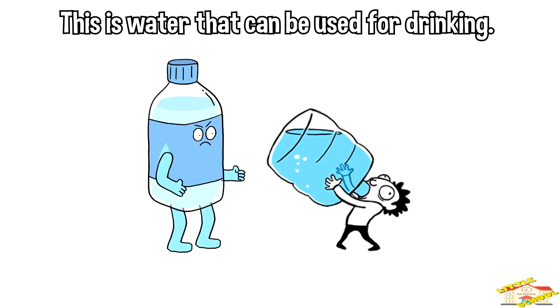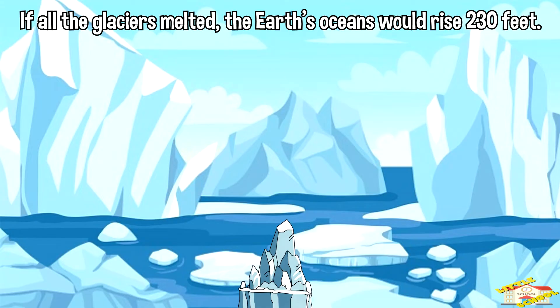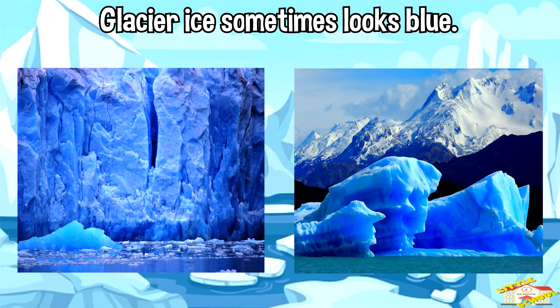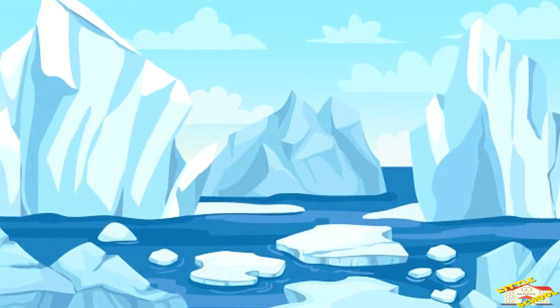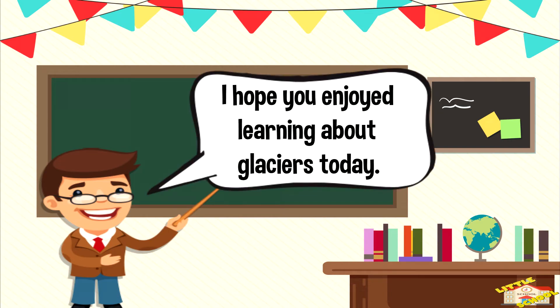This is water that can be used for drinking. If all the glaciers melted, the Earth's oceans would rise 230 feet. Glacier ice sometimes looks blue — this happens because the dense ice absorbs other colors in the color spectrum but reflects blue back. And that is all for today's video. I hope you enjoyed learning about glaciers!